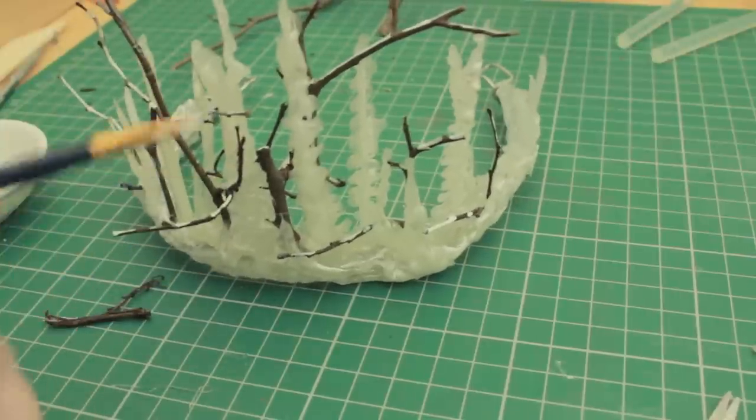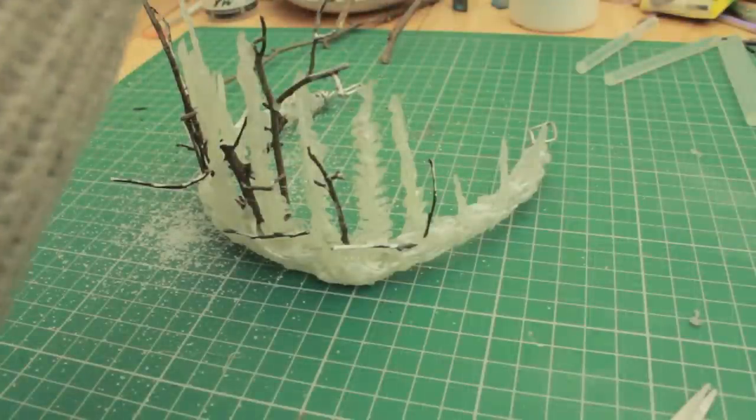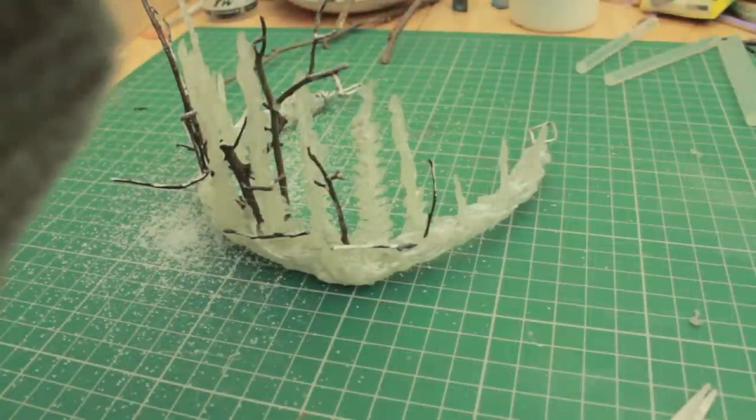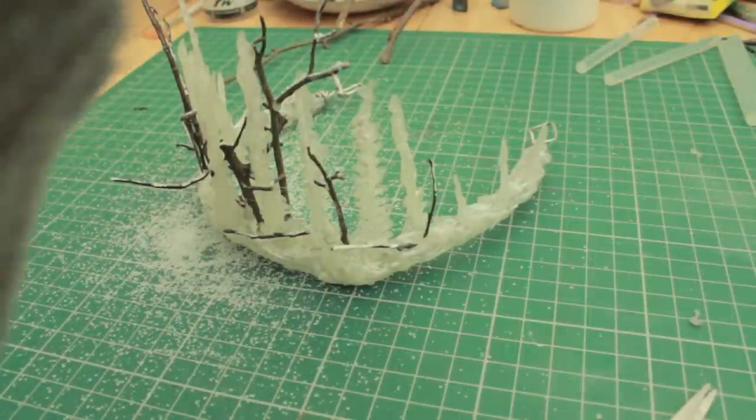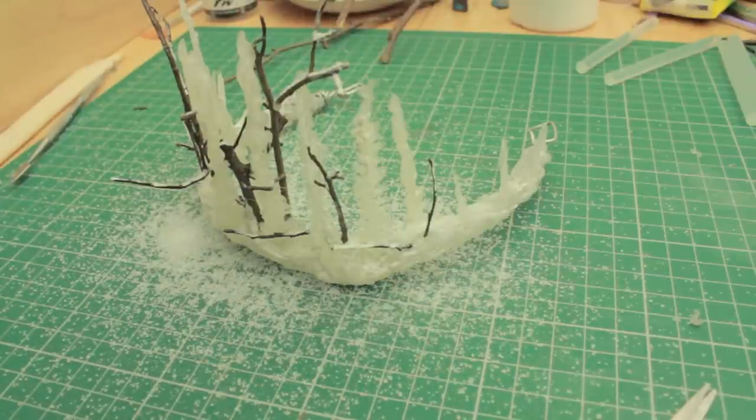Once I've covered the crown in a thin coat of glue, I'm going to take sugar and I'm going to sprinkle it all over. It should stick to where you've put the PVA glue and water, and that will make the icicles look a little bit more crystallized and just a little bit more interesting.